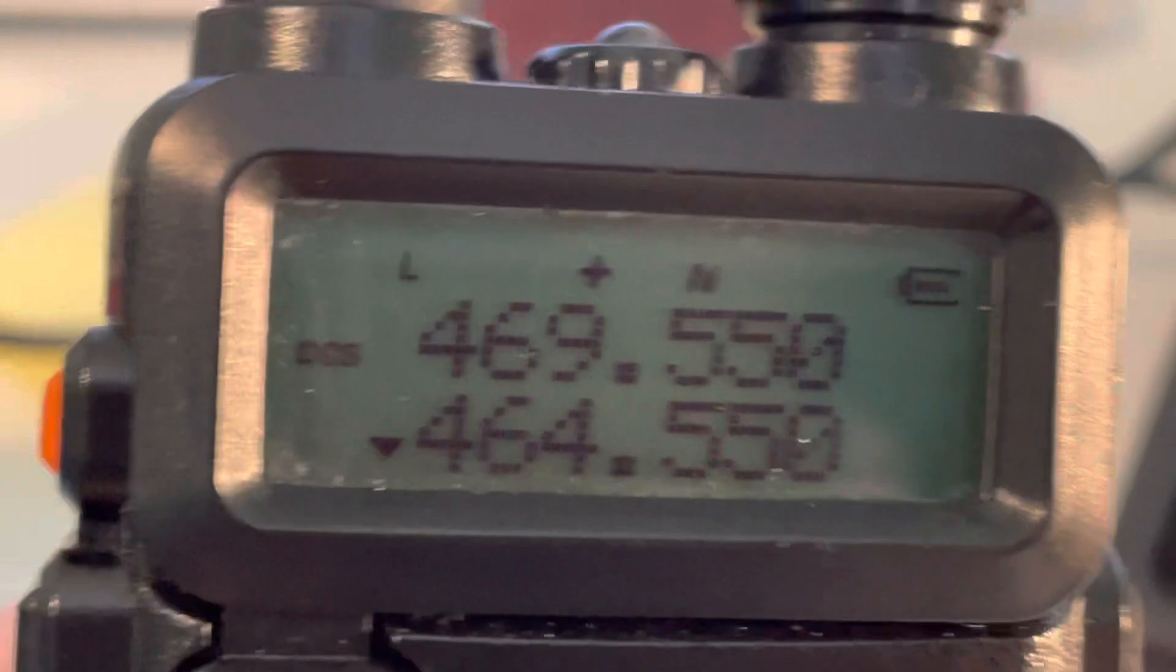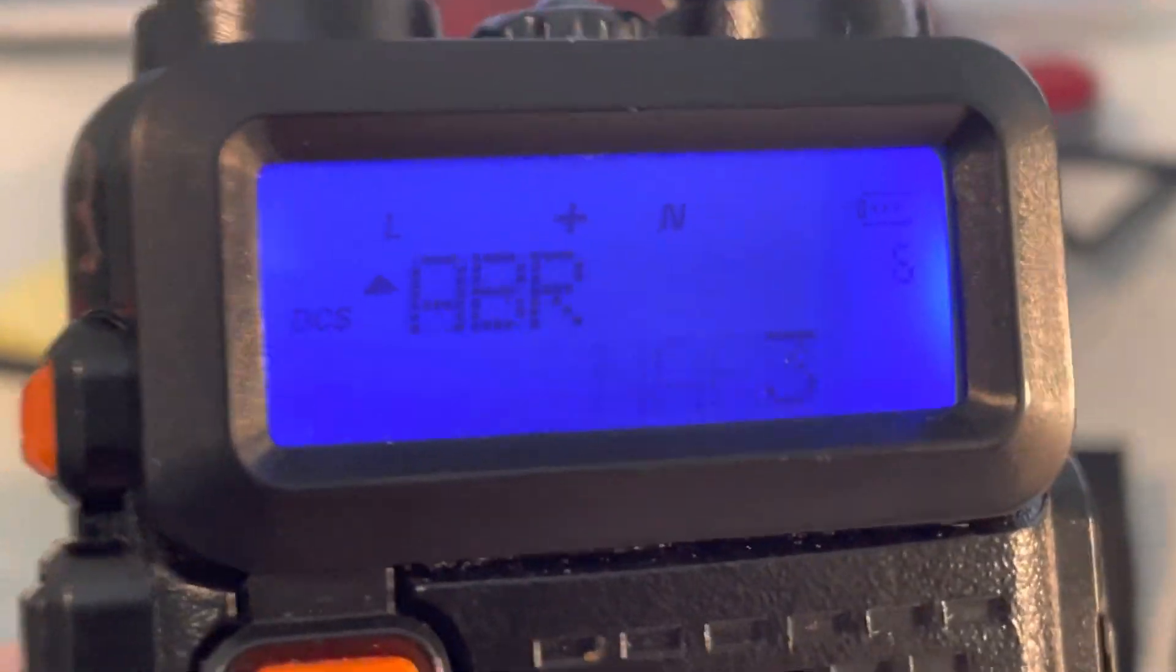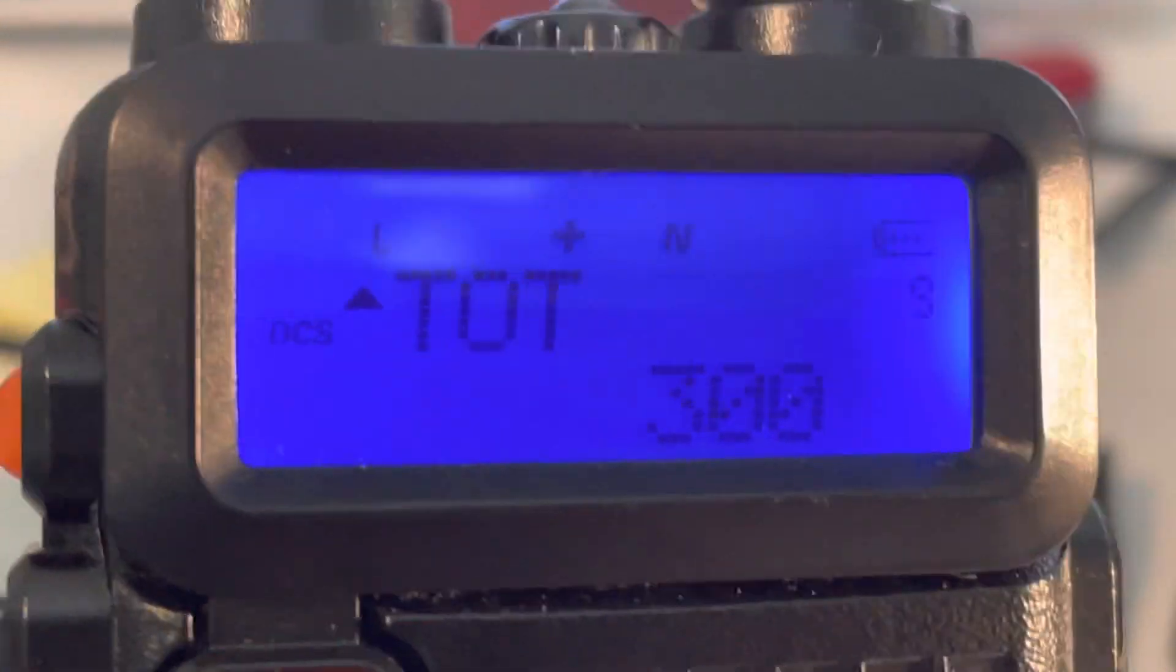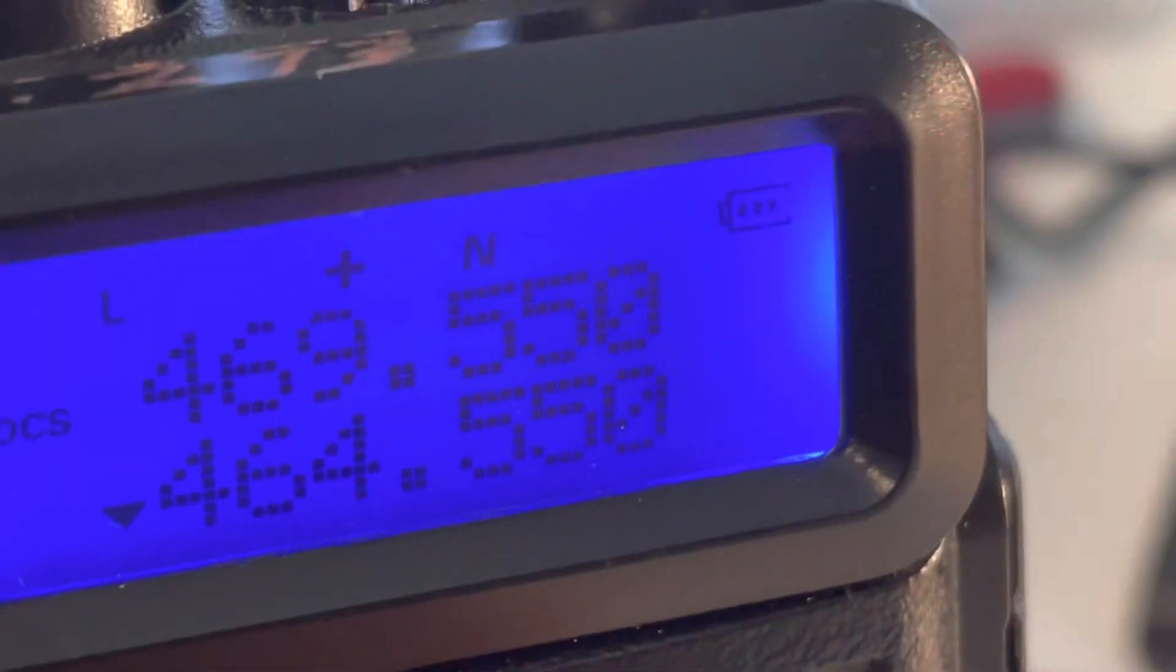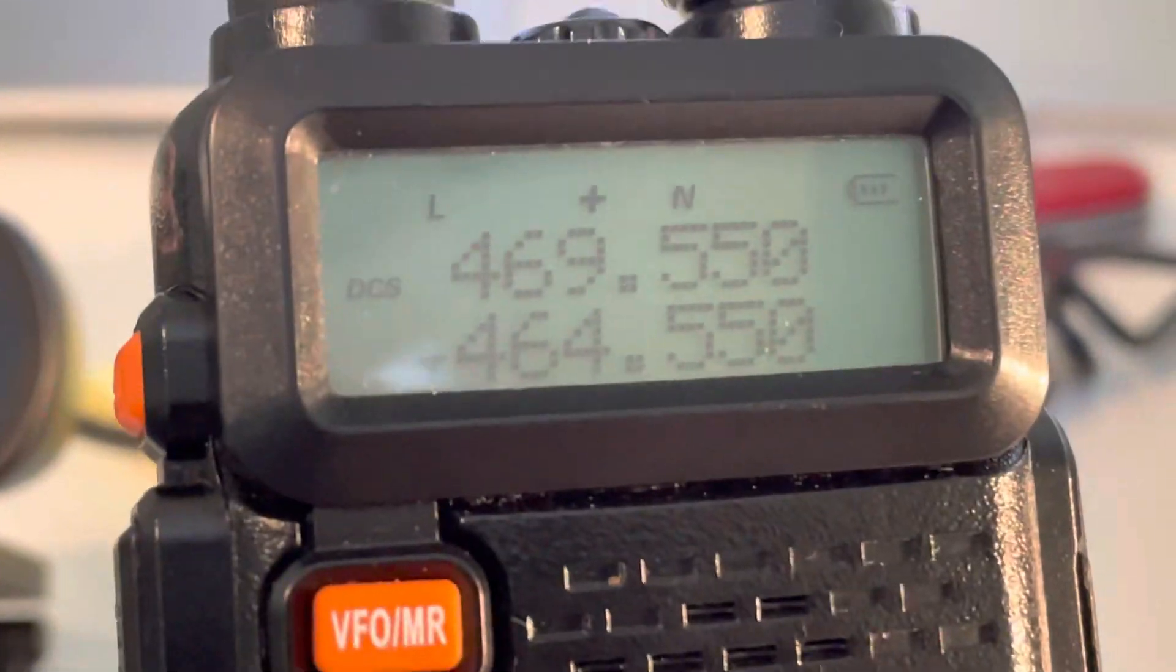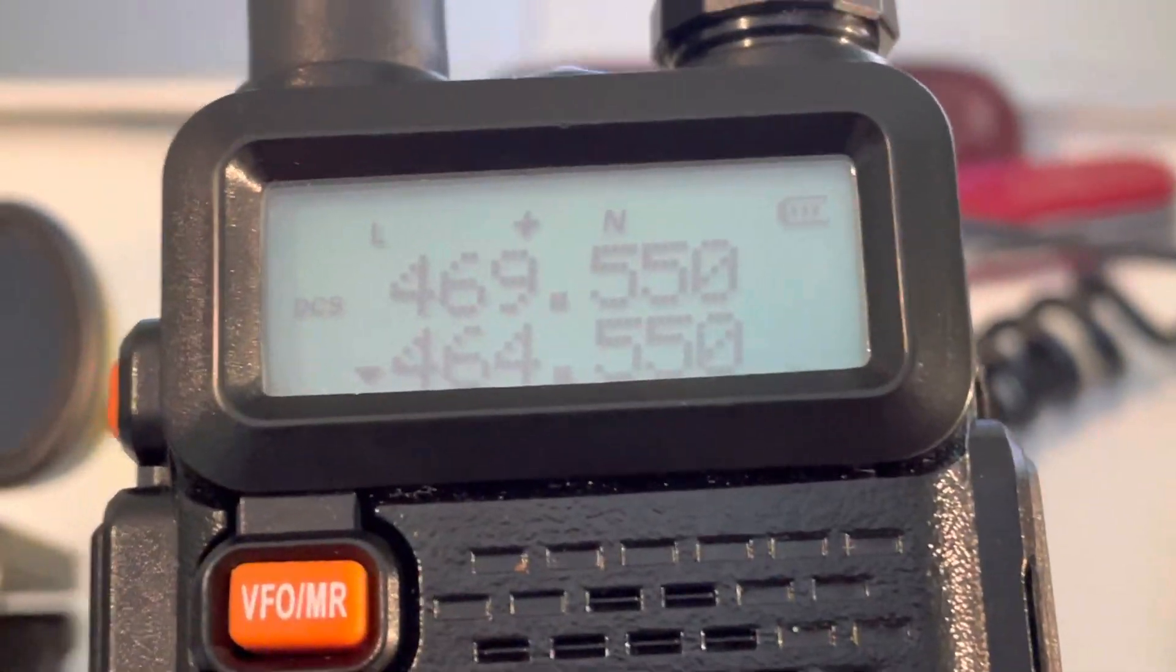They're running a DCS tone - DCS code, I should say. The code is well known, so I'm 99.9% sure I know who it is based on the DCS code that they're using, and the fact that they're running a temporary repeater on this particular frequency. Like I said, there's only four pairs that you can do that on, and then the frequency plus five megahertz becomes the input.